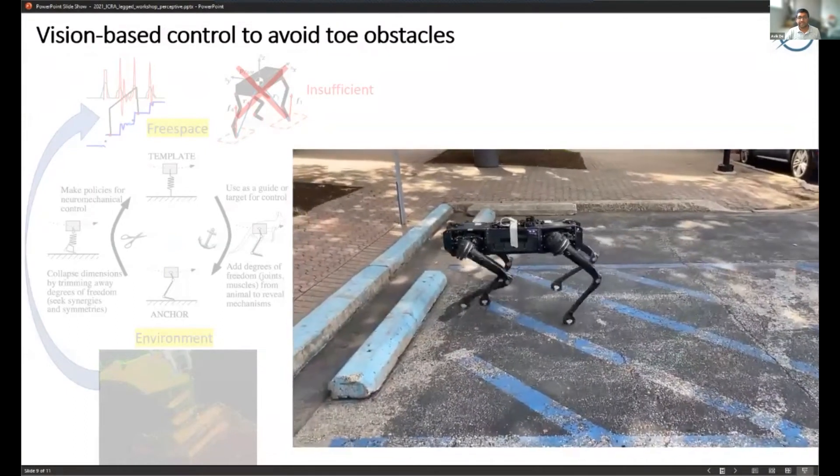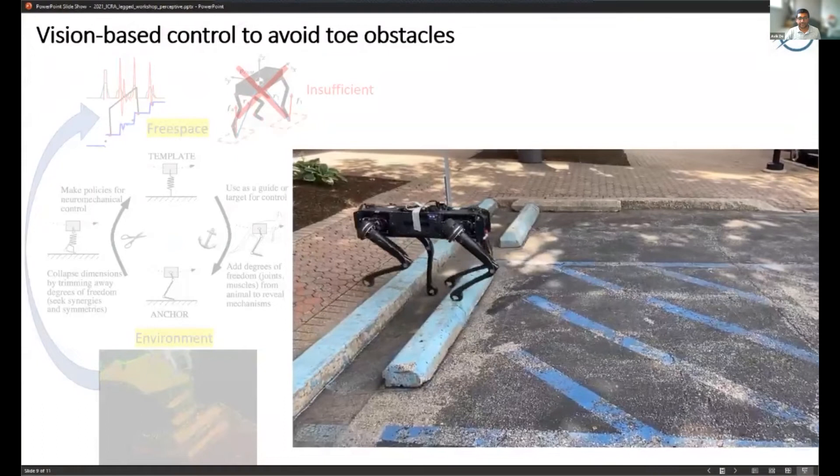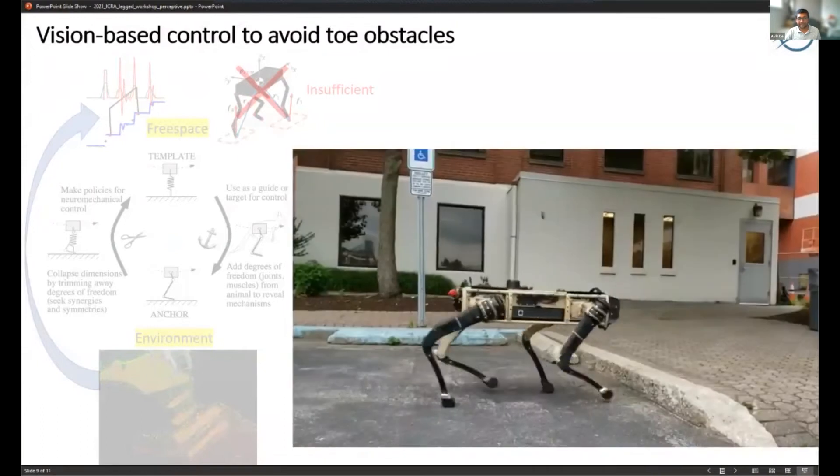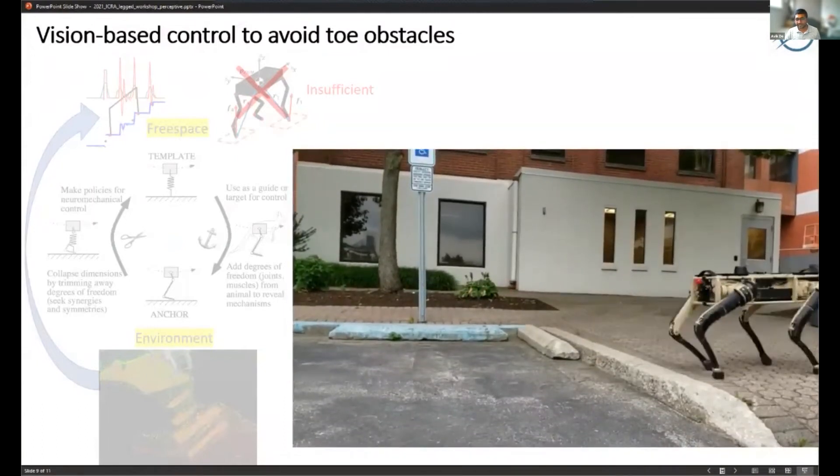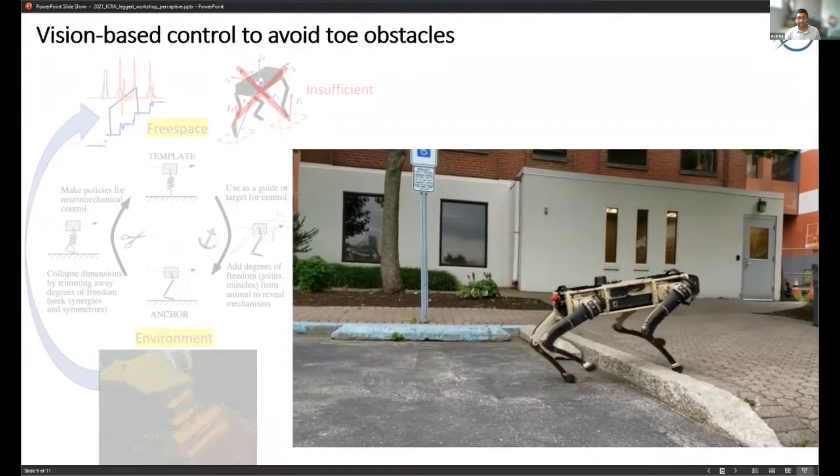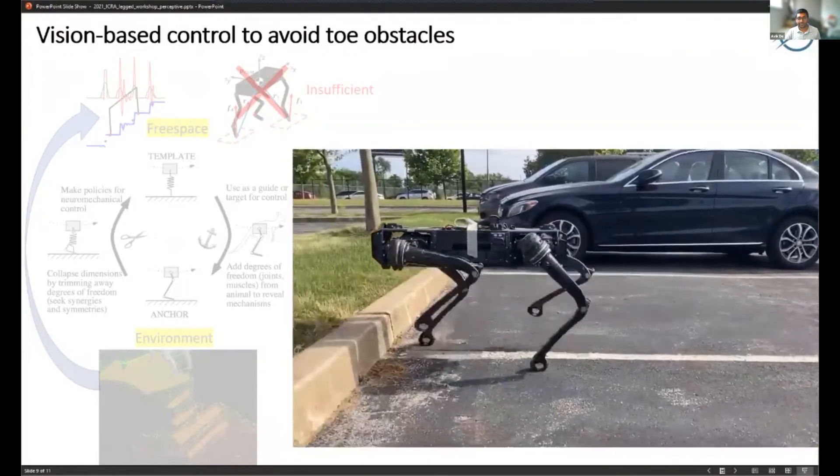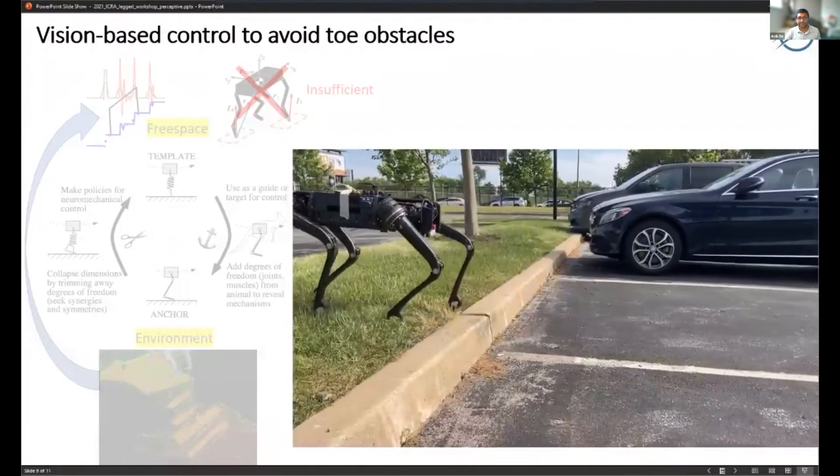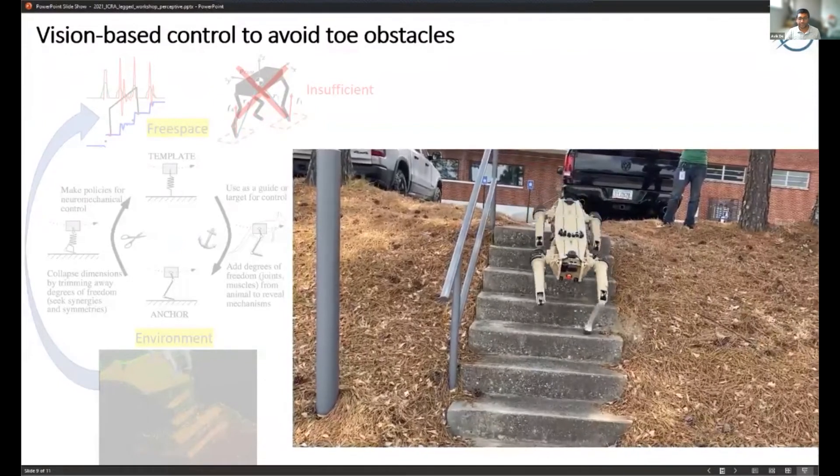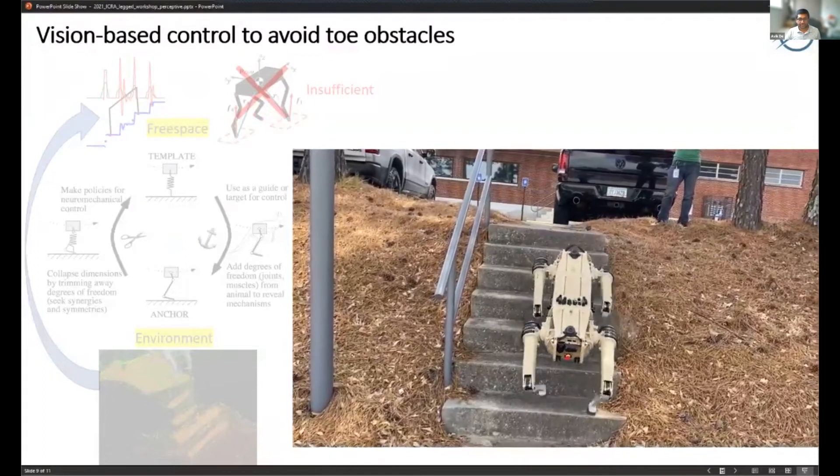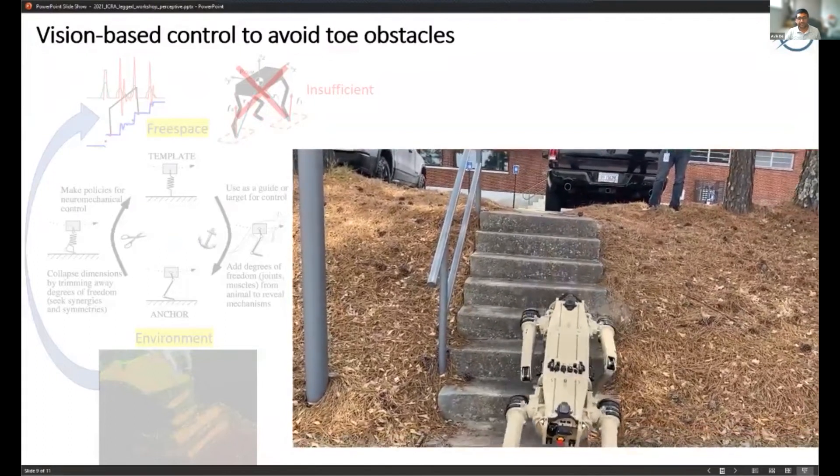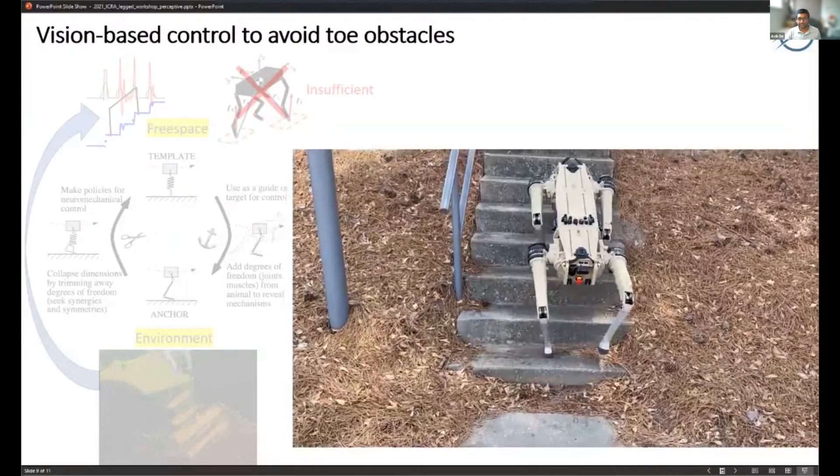Basically we've done that and you can see here we're showing some results now using vision to get an idea of the environment for the feet, getting an idea of where the toe obstacles are, mapping them into this slightly modified template model and using that for controlling the locomotion. So the robot doesn't need to blindly go up curbs or on stairs but can use the visual information that's available.